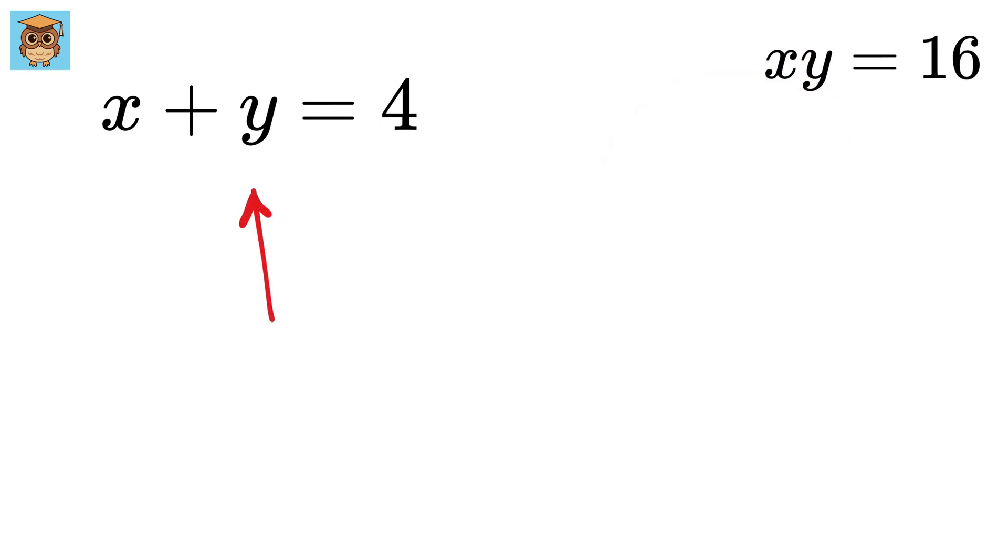First, consider this equation. We can rewrite this y as 4 minus x. Now, substitute this y in this to get x times 4 minus x equals 16.